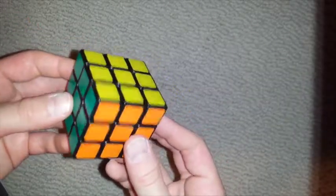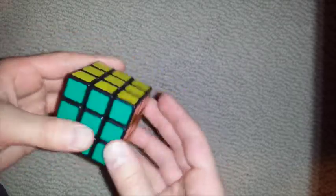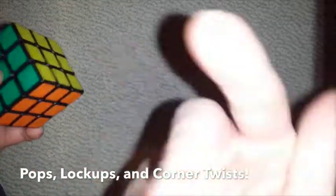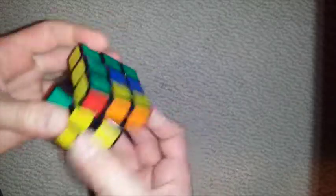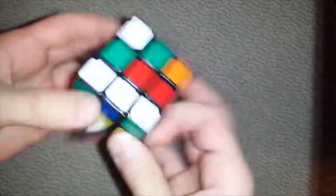Now let's get to the serious problems, what you actually experience in solves. Pops, lockups, and corner twists. As far as pops go, this cube will not pop, I'll tell you that. The corner bases are big, the torpedoes completely stop the edge from popping, it just won't. It might fall out of your hand if you're going rough. It won't pop, and if you're going pretty rough, it'll either A, fall out of your hand, or B, lockup.